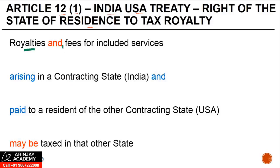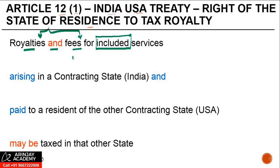This clause covers royalties and fee for included services. In 9 out of 10 treaties you are going to find the words 'fee for technical services,' but under the India-US treaty the word 'technical' is replaced with 'included services.' So if the payment qualifies as either royalty or fee for included services — the definition of both will be available during the course of our discussion in the next few slides.